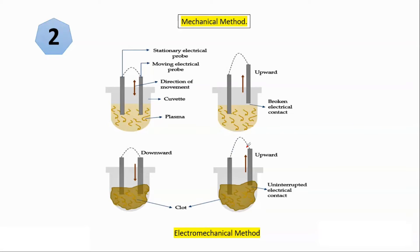So guys in this method we are using electromechanical system. Here one electrode or one probe, electrical probe, is fixed at position and one is free to move or free to oscillate. So here what will happen is we put all the reagent stuffs in a cuvette and these probes, one is fixed inside it and one is free to move or free to oscillate.